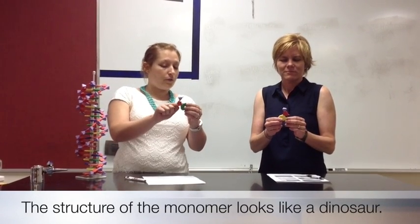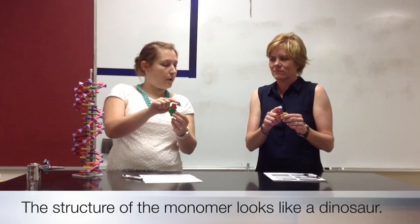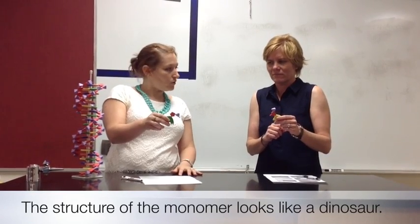This little five-sided object right here, that's the sugar. And then up here, the purple one, that's our phosphate group. So we say it kind of looks like a dinosaur.